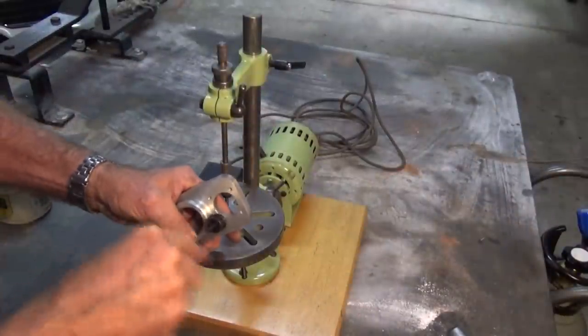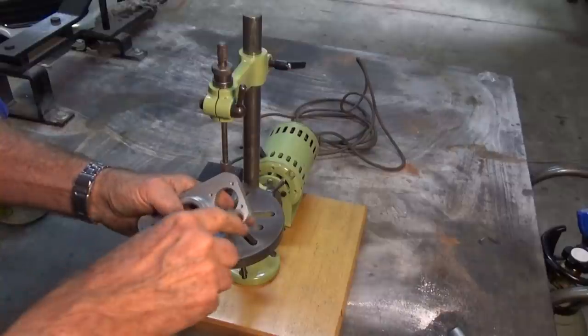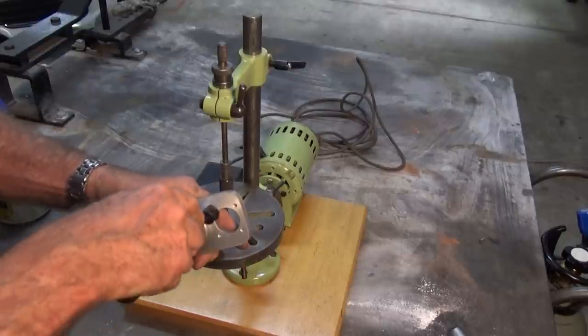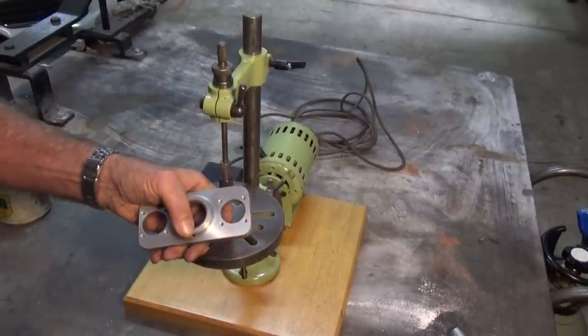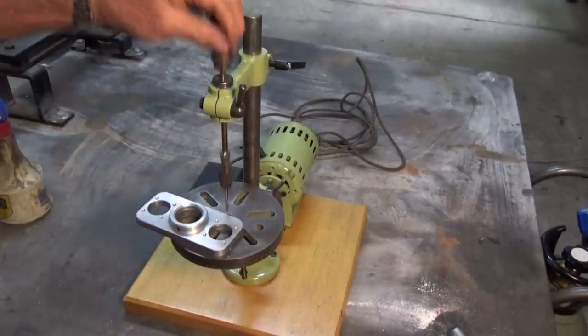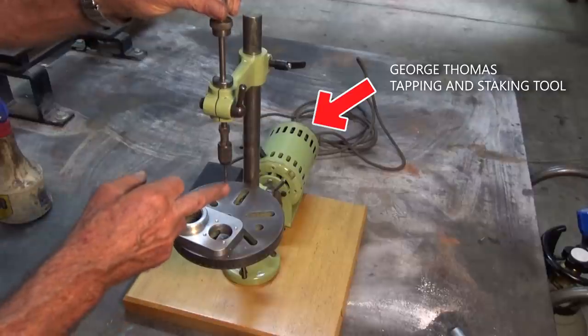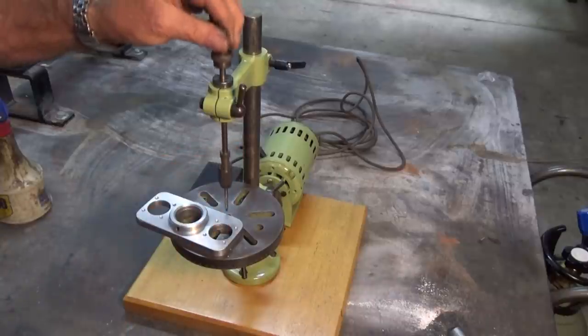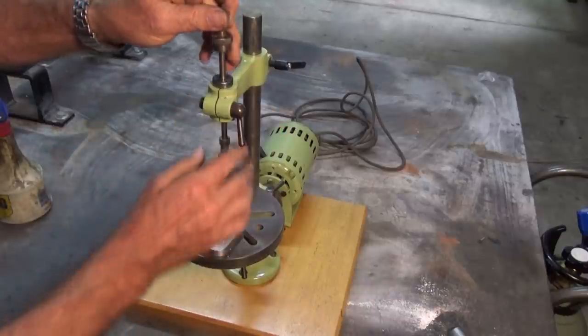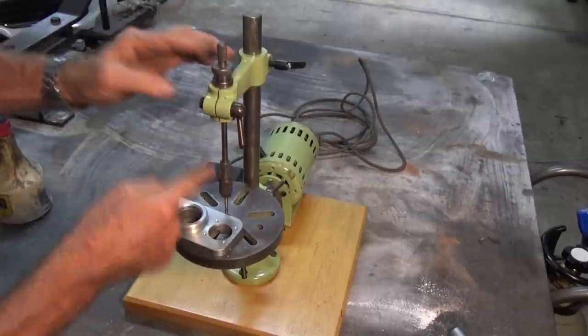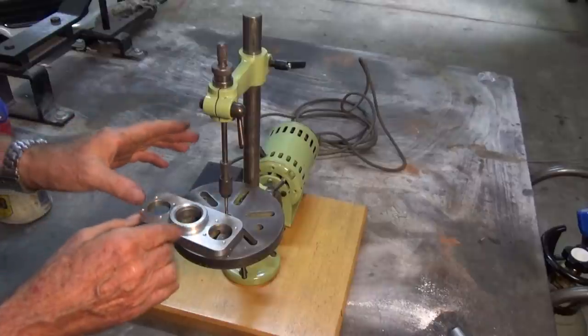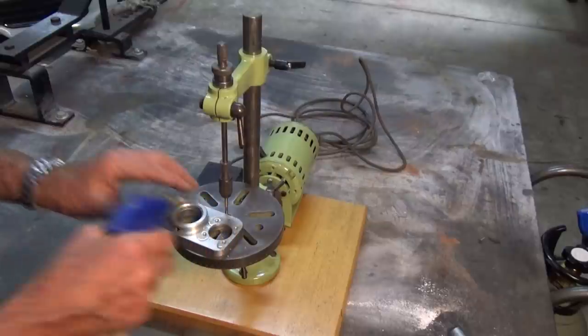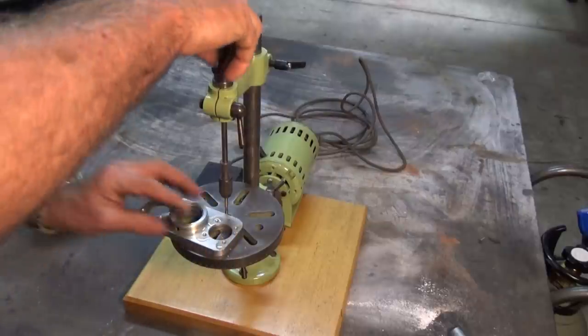I was watching one of Blondiehack's videos recently and saw this little tool and I absolutely fell in love with it. It's a genuine Noga. It wasn't cheap, but so easy to use. This is the setup I'm using here now. I've got an M4 tap in this Eclipse tap holder, which has been pinned to a shaft that slides up and down in this collar.